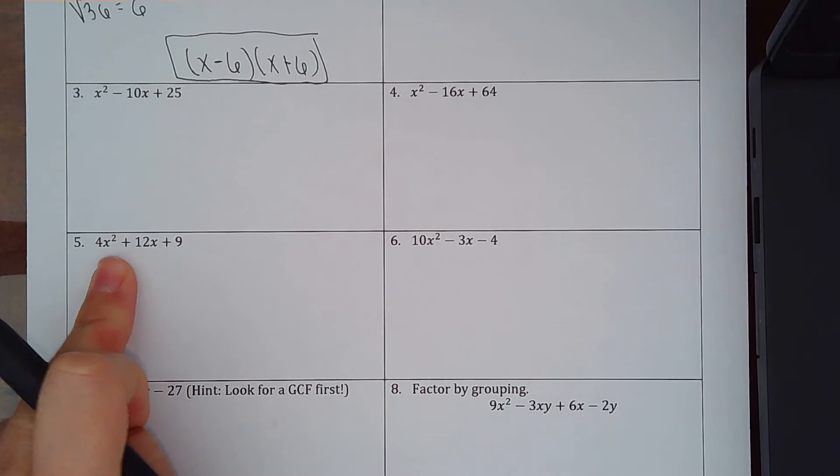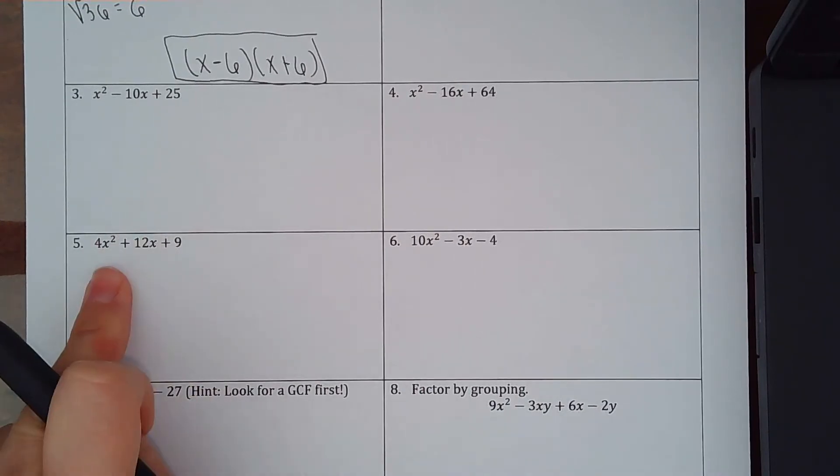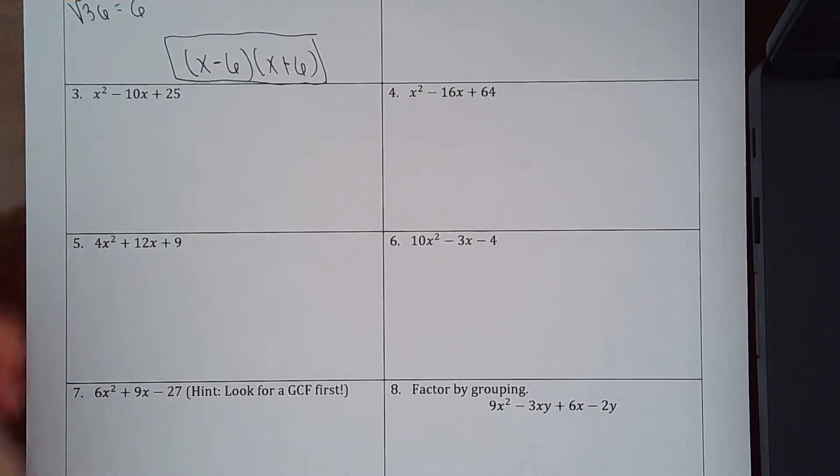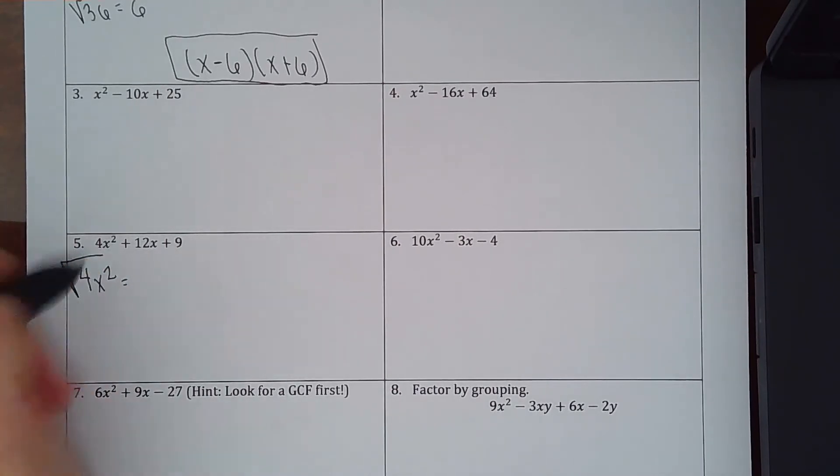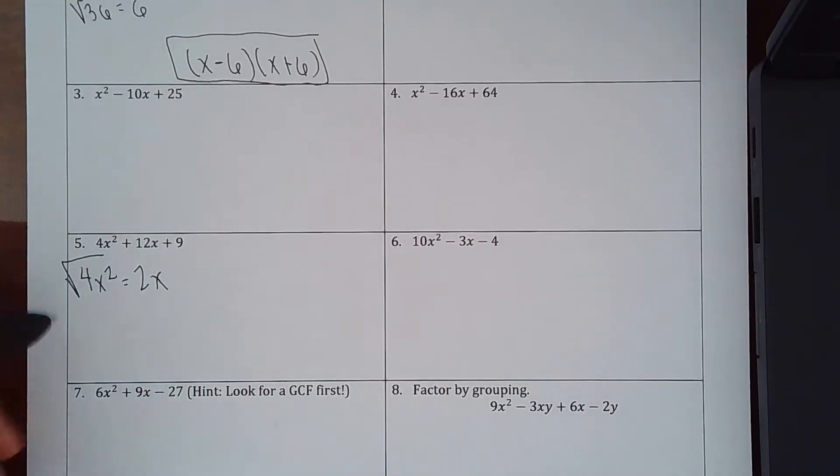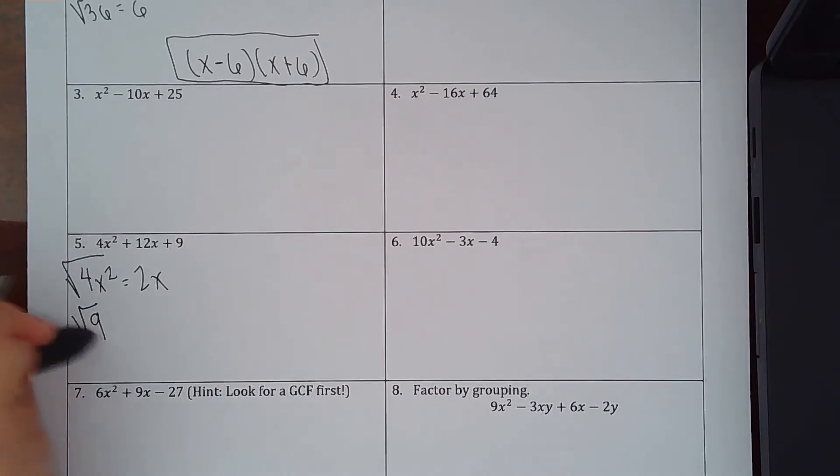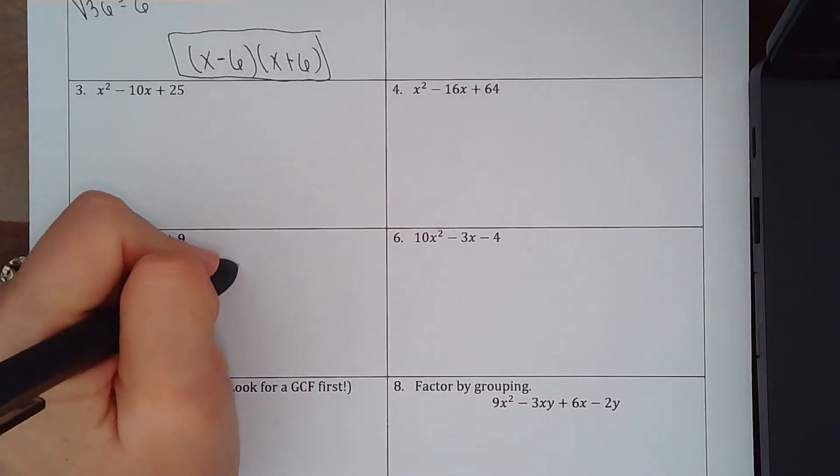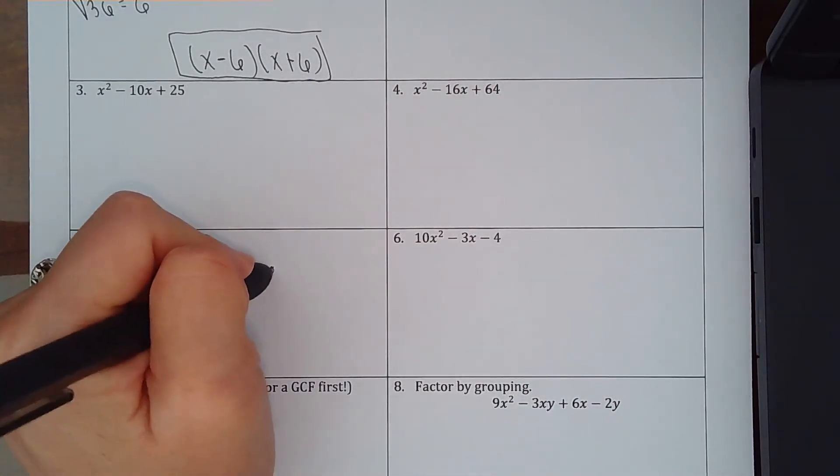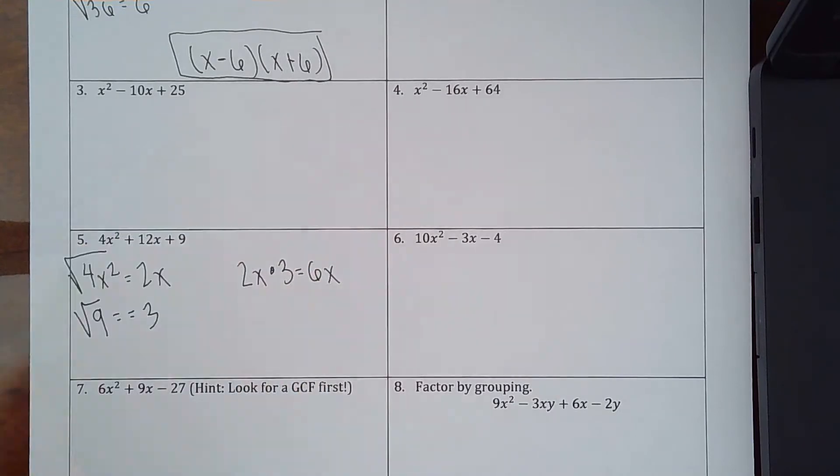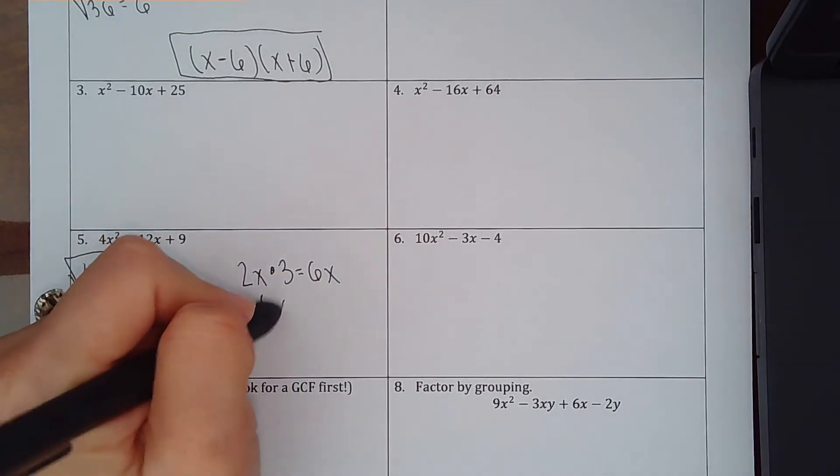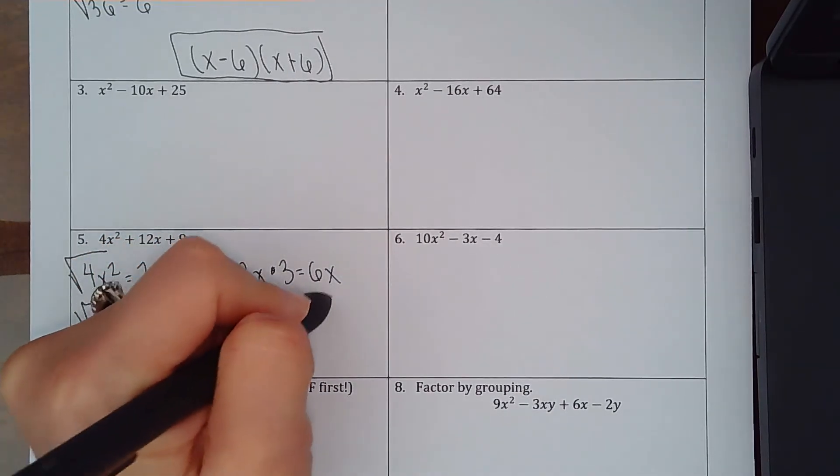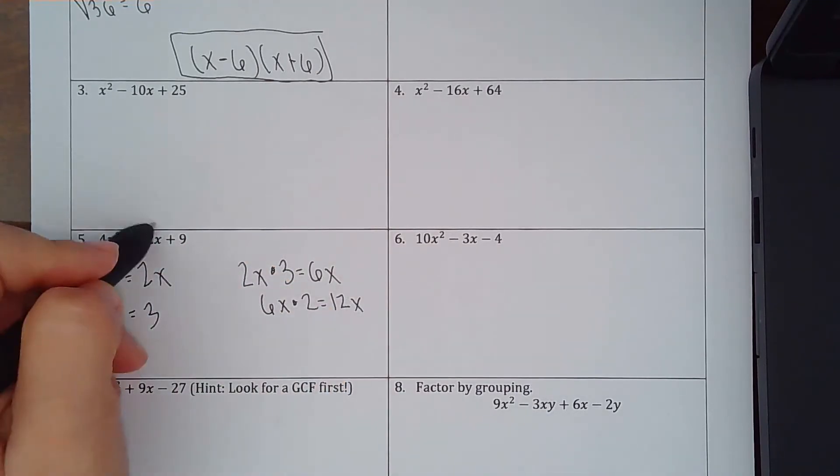I am going to see if there's a GCF to factor out first, and there isn't. So I'm going to take 4x squared, and I'm going to take the square root of it, which is going to give me 2x. And I'm going to take 9, and I'm going to take the square root of it, which is going to give me 3. And if I want to, I can multiply them together, 2x times 3, which would give me 6x. And if I took that 6x and I multiplied it by 2, I would have 12x, which is my middle term.